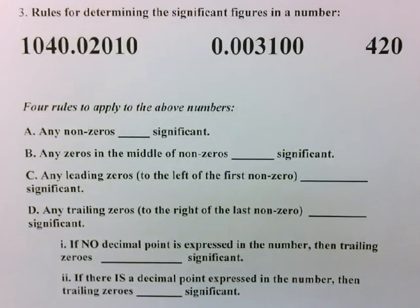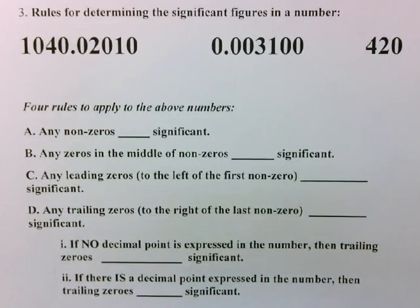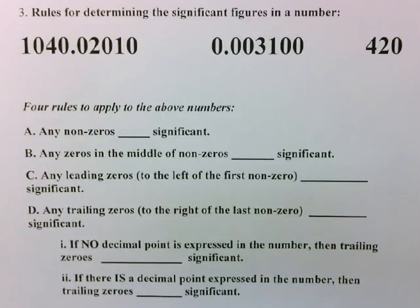Significant figures represent the degree of precision of a number that we might get from measurement or calculations. In simple terms, this tells us how much we can trust the number. A key concept is that a calculated answer can never be more precise than the numbers used in the calculation. So in order to do calculations and report them based on significant figures, we first have to be able to identify significant figures when they're in a number.